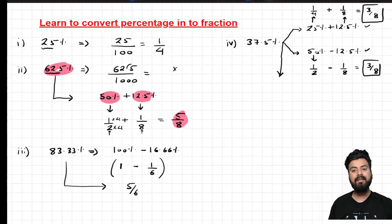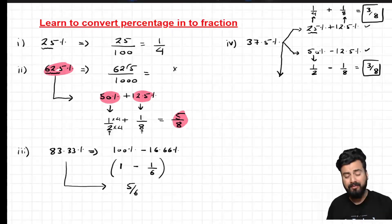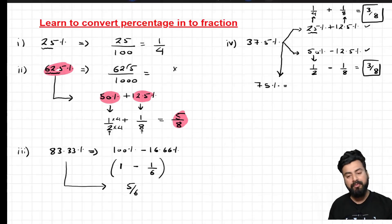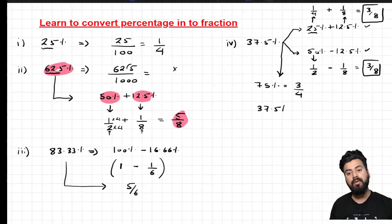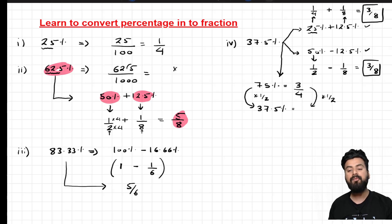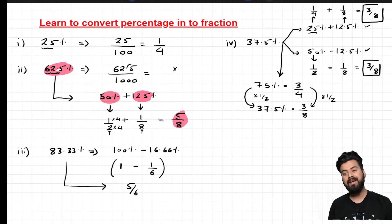A third approach: if you already know that 75% = 3/4, you can observe that 37.5% is half of 75%. So you take half of 3/4, which gives 3/8 directly. This is a third valid way to convert the percentage value into a fraction, showing the flexibility and elegance of using known equivalents.